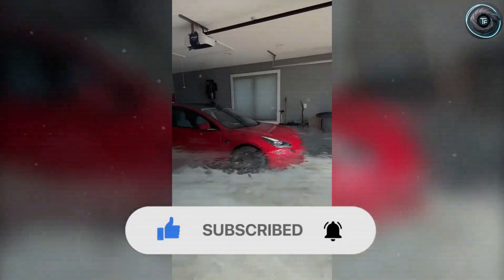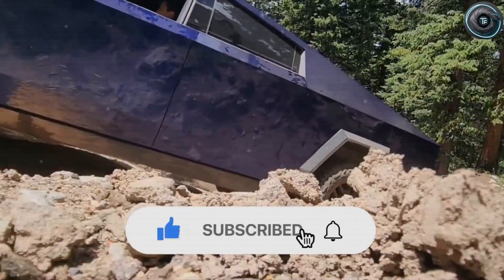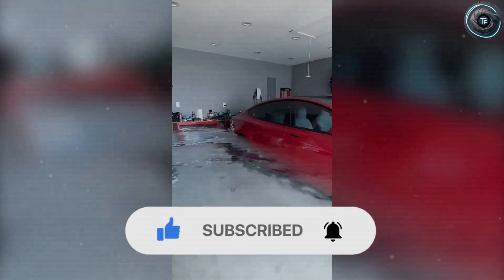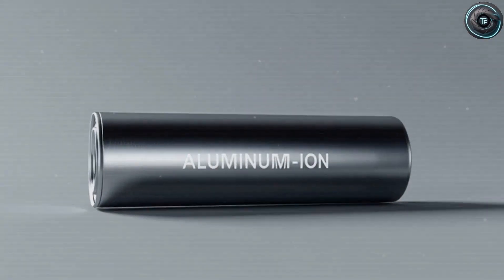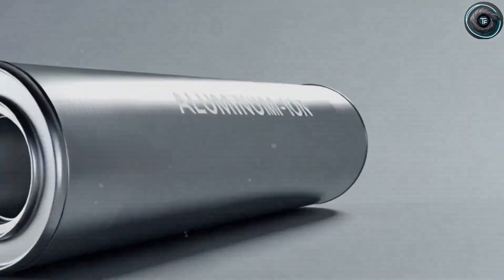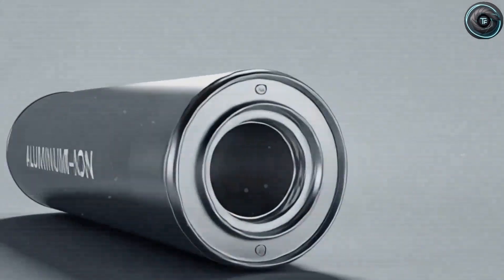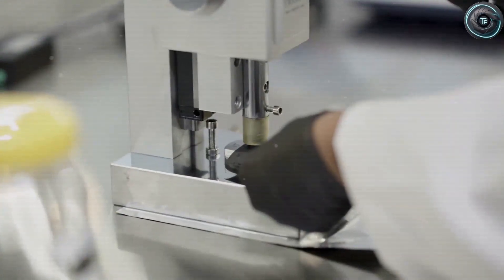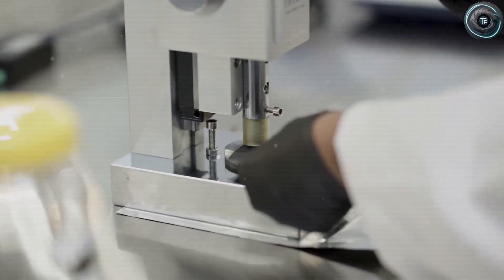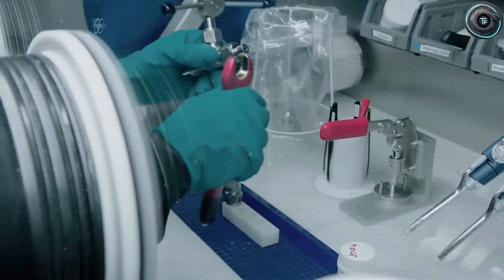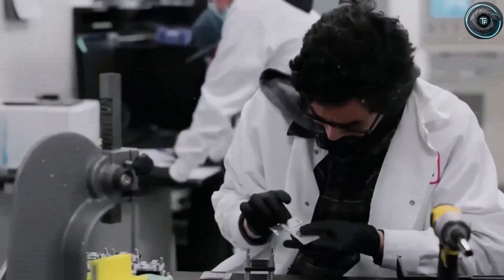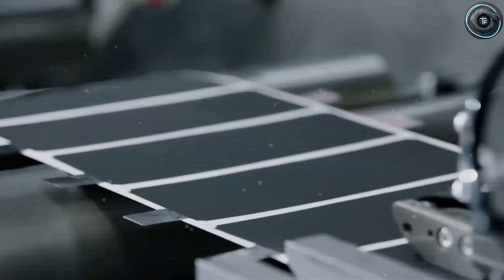A future where charging takes minutes, where every journey feels smooth and effortless, and where your car protects you, not the other way around. So if you've ever dreamed of the day when electric cars finally surpass everything that came before them, that day may be closer than you think. Tesla's aluminum-ion battery could be the final missing piece of the puzzle—the technology that brings the EV revolution full circle. This is Torque Element, and as always, we'll keep bringing you every breakthrough, every leak, and every secret that shapes the future of mobility. Because when it comes to innovation, the details matter. And this time, those details just might rewrite the history of energy itself.